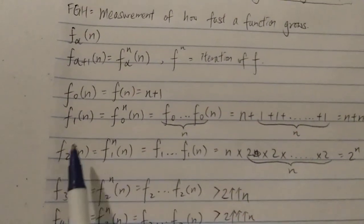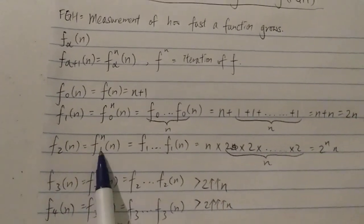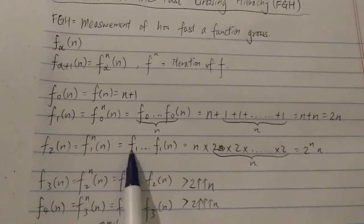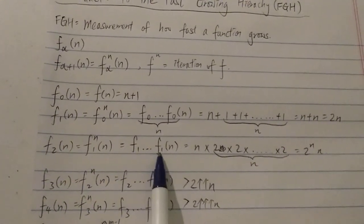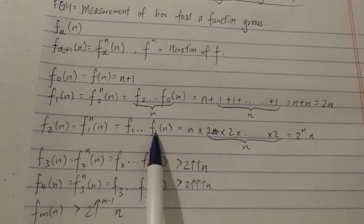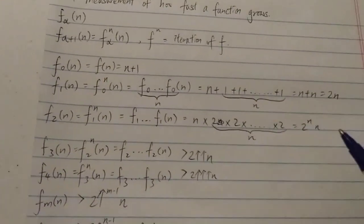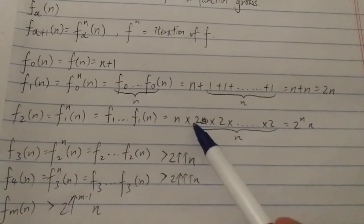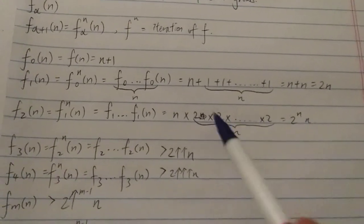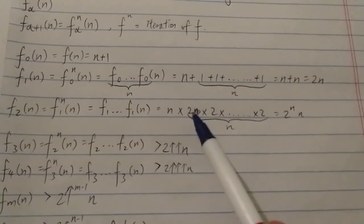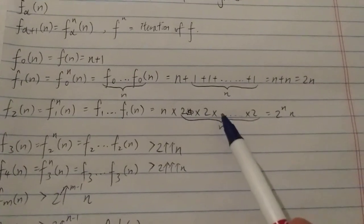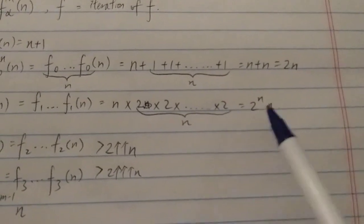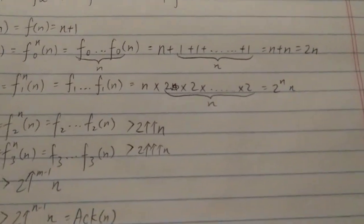The next level is F(2, n), which equals F(1, n) iterated n times applied to n. F(1) iterated n times gives n times 2, repeated n times — so 2 times 2 times 2, for n times — which equals 2 to the power of n times n, roughly 2^n.